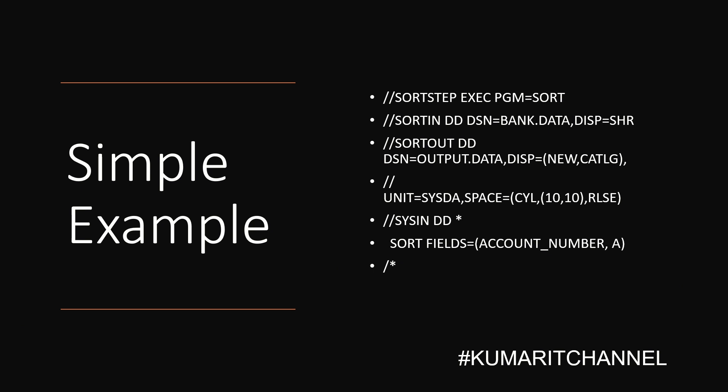In this example, the sort card specifies that the input data bank.data should be sorted based on the account number field in ascending order. And if you want to sort it in descending order, you can put 'D' — so it would sort it in descending order. This is a simple example just to get started.